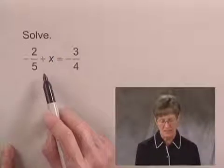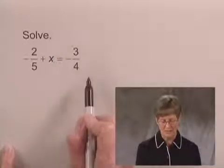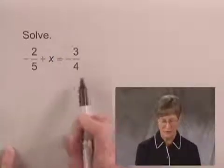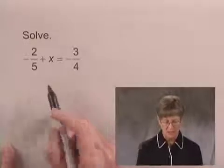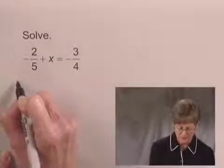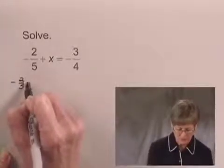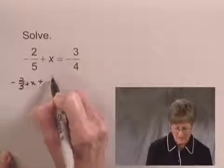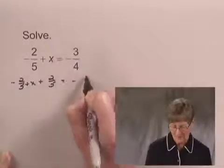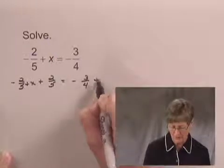And the addition principle tells me that I can add the same number on both sides of the equation without changing the truth of the equation. So I'm going to add two-fifths on the left side. We'll start with negative two-fifths plus x and add two-fifths. And I'm going to add the same number on the right side of the equation.